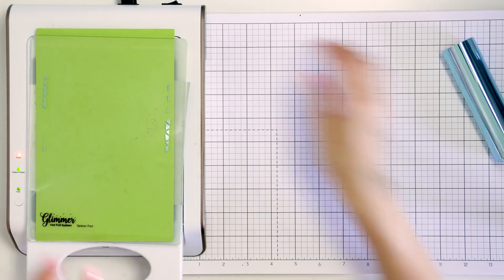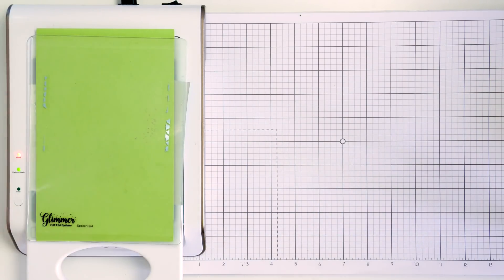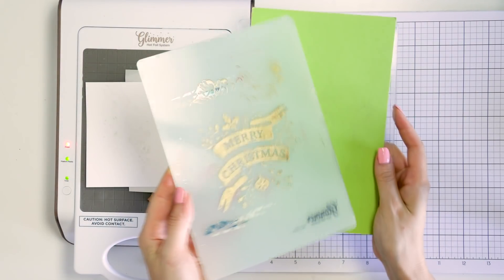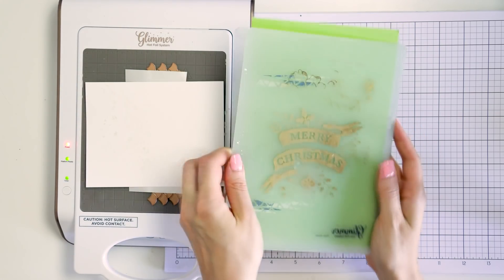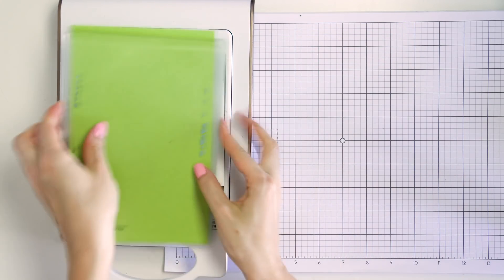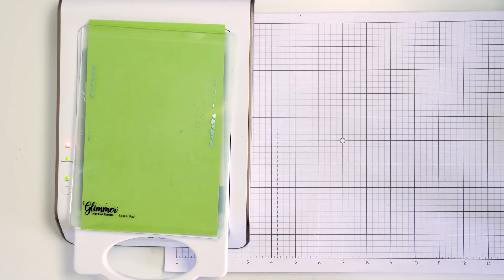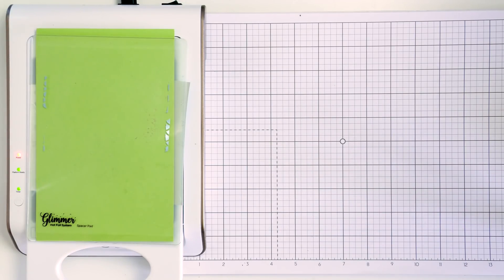The next step is to build the sandwich and get it ready to go through your die cutting machine to apply the pressure and transfer the foil to the paper. For this you have two shims or plates that come with the glimmer hot foil machine. You can see my plates have been well used and loved. I have a lot of foil transfer here. I once even foiled on one of the plates instead of the paper by accident.